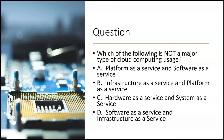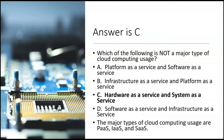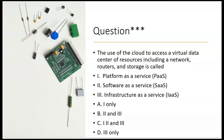How about this: which of the following is NOT a major type of cloud computing usage? A — Platform as a Service and Software as a Service — no, they both are; don't pick A. B — Infrastructure as a Service and Platform as a Service — no, they both are; don't pick B. We're looking for something that's not a major type. C — Hardware as a Service and System as a Service — that's not a major type of cloud computing usage, so C looks good. D — Software as a Service and Infrastructure as a Service — no. C is our answer because the major types are PaaS, IaaS, and SaaS, and the 'S' stands for software, not system.